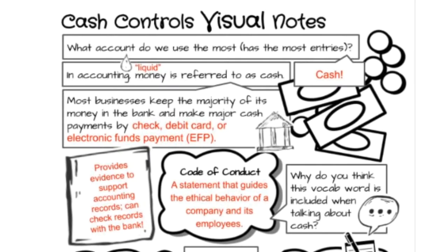Code of conduct is a vocab word in this chapter. It means a statement that guides the ethical behavior of a company and its employees. This word is included here because unethical behavior in business often surrounds money, making it an appropriate vocabulary word for our chapter about cash.